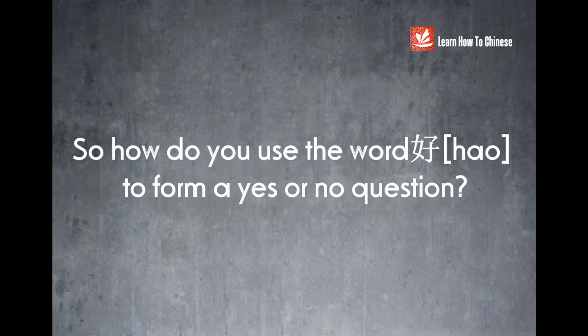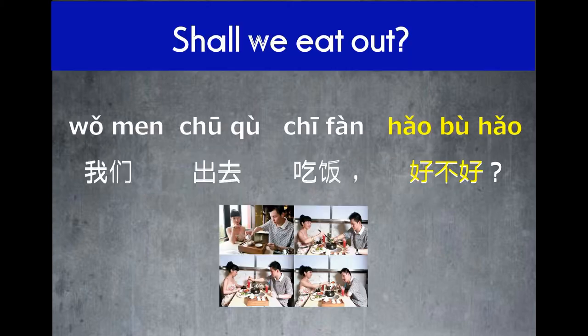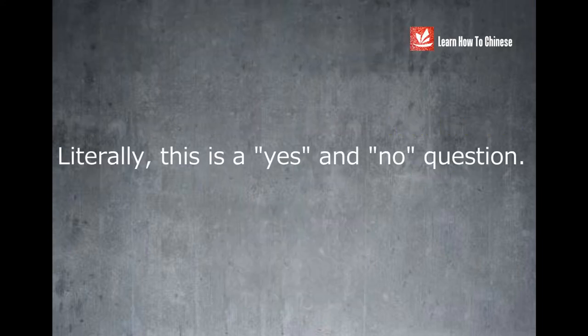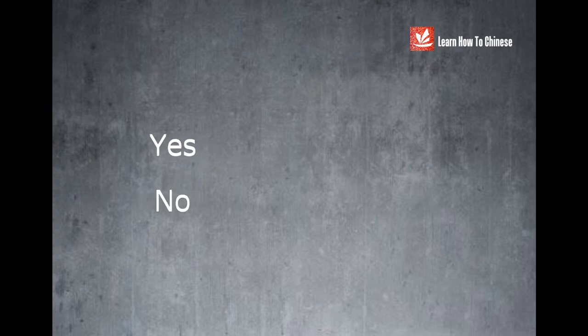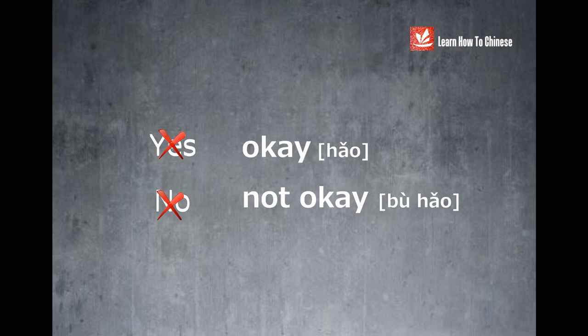So, how do you use the word 好 to form a yes or no question? For example, 'Shall we eat out?' — 我们出去吃饭好不好? Here the word 好 means 'okay' or 'good', so 好不好 means 'okay or not okay'. Literally, this is a yes and no question. Instead of using yes and no to answer the question, we say okay or not okay.